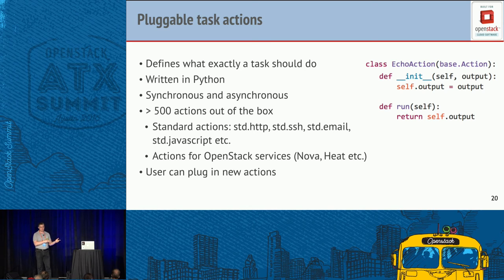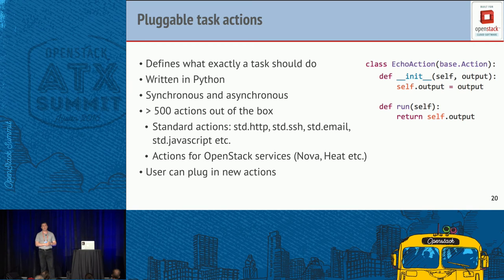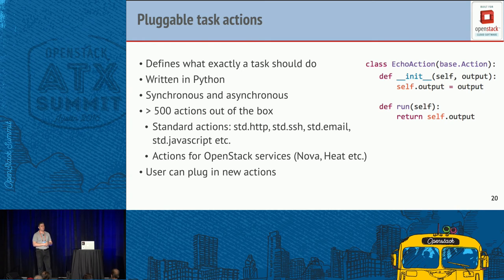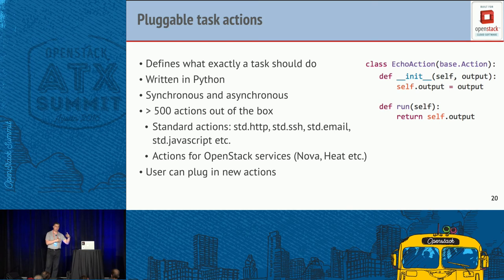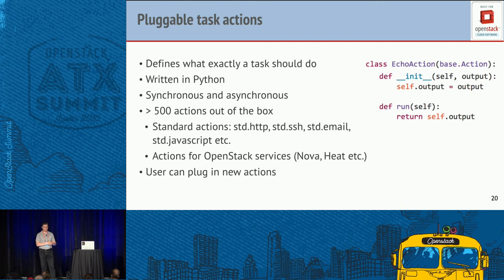We also have a set of actions for calling OpenStack services, currently including most core OpenStack services like Nova, Neutron, Heat, and Cinder. If you need an action that doesn't exist, you can write simple Python code — the boilerplate is really small — implement your own actions, and plug them in.